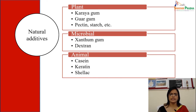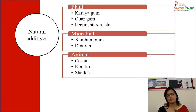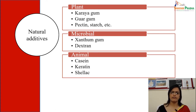I have represented rheological additives in a tabular form. Natural additives mean the source is from nature — either plant, microbial, or animal.